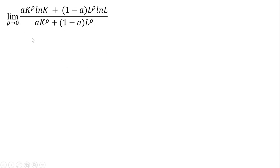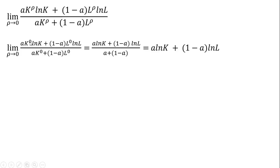Just rewriting that, and now where we have rho, we set rho equal to zero. Starting with the denominator: k raised to the power of zero is one, l raised to the power of zero is one. You're left with a result where a minus a cancels, leaving just one — a nice result in the denominator. In the numerator, again k raised to the power of zero is one and l raised to the power of zero is one, giving us the following result, all divided by one.